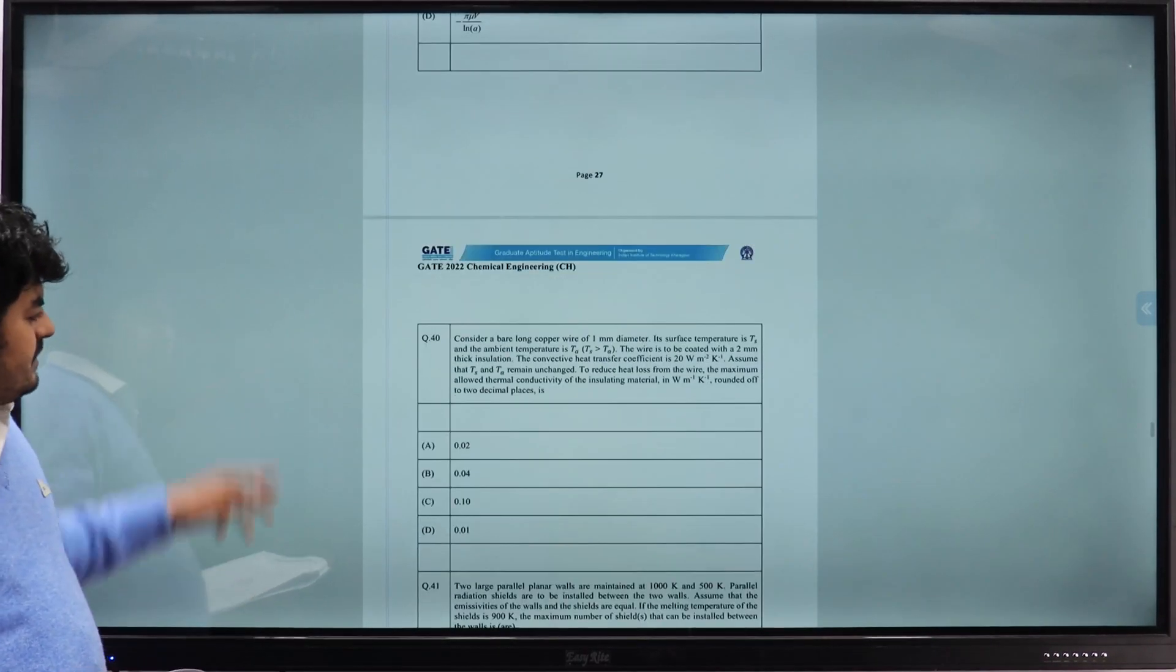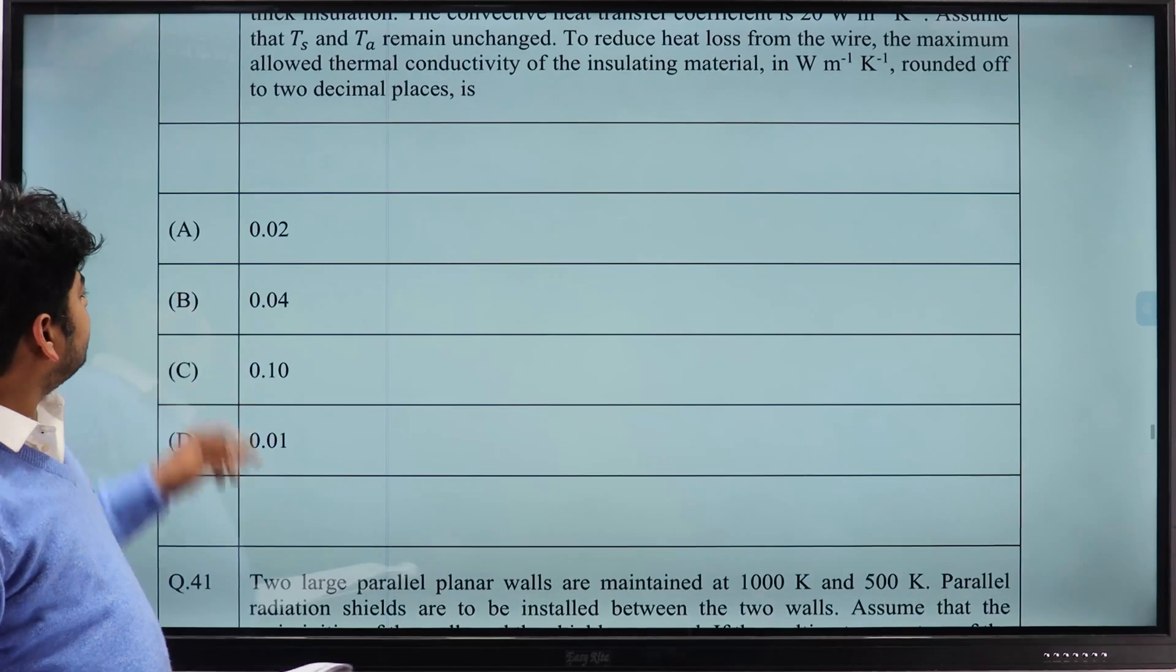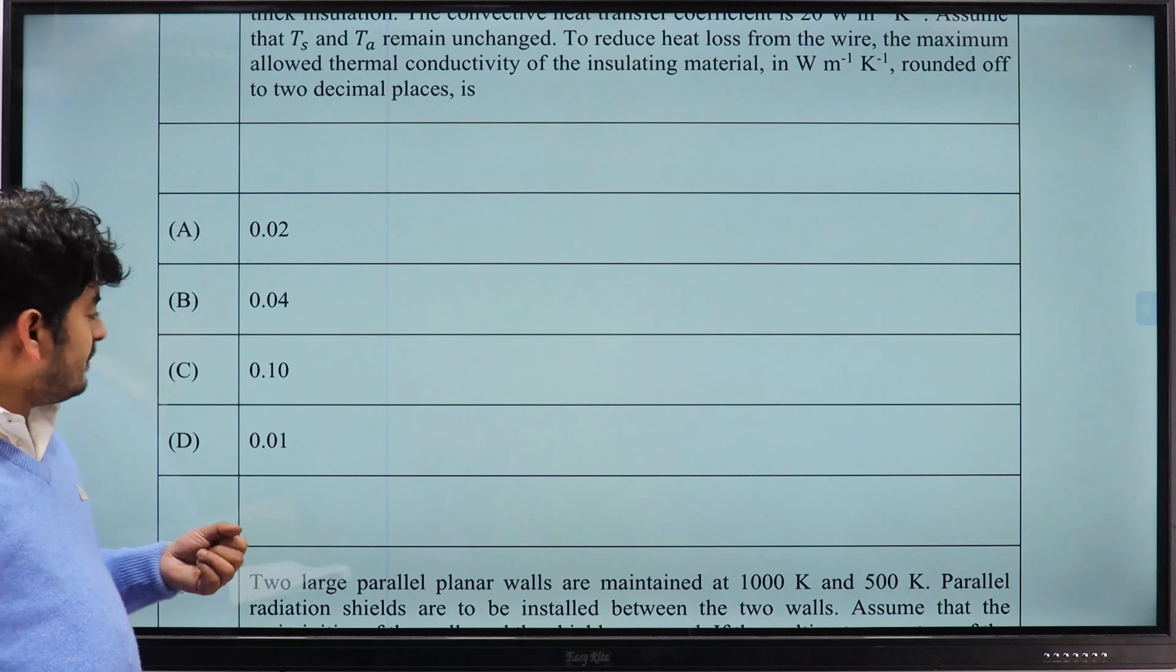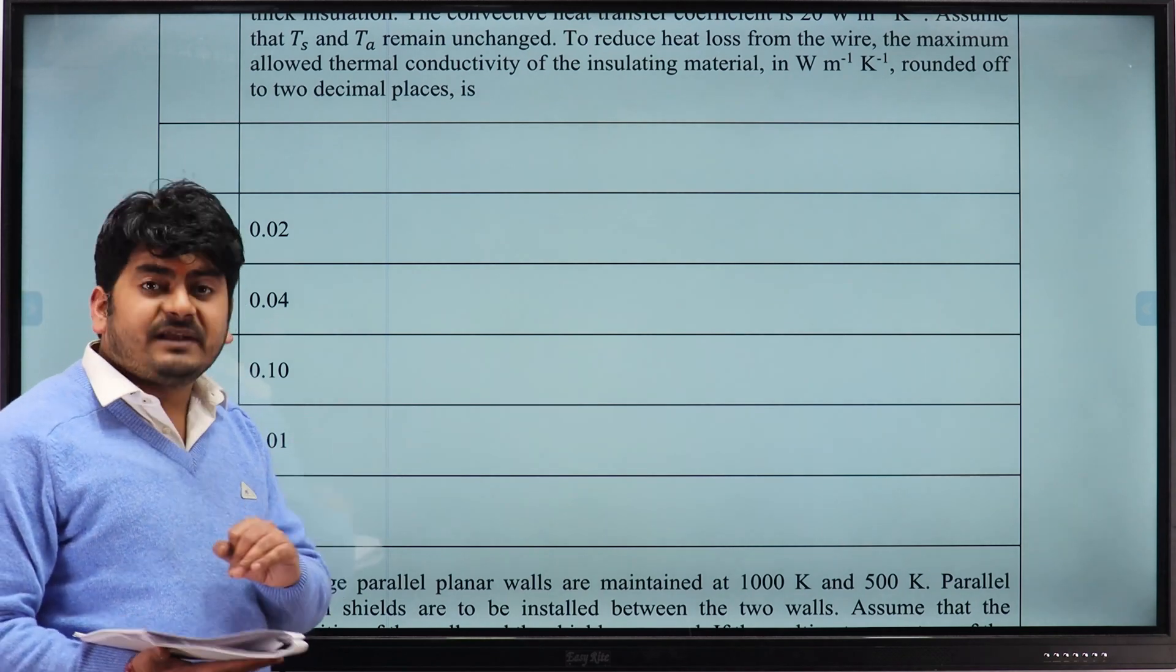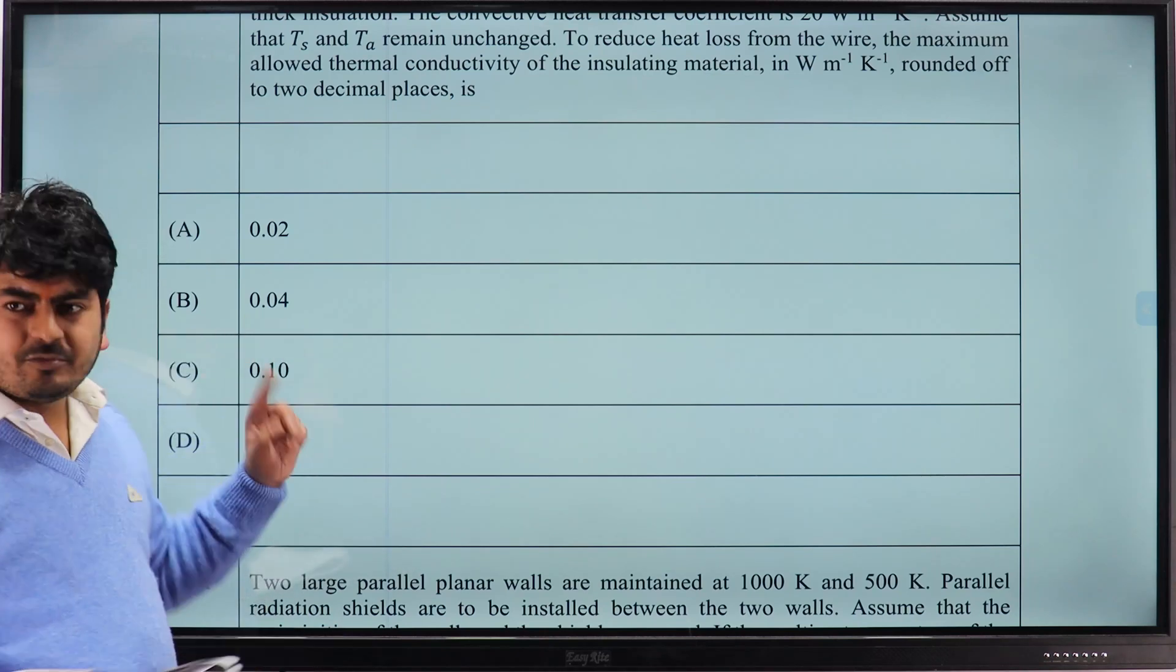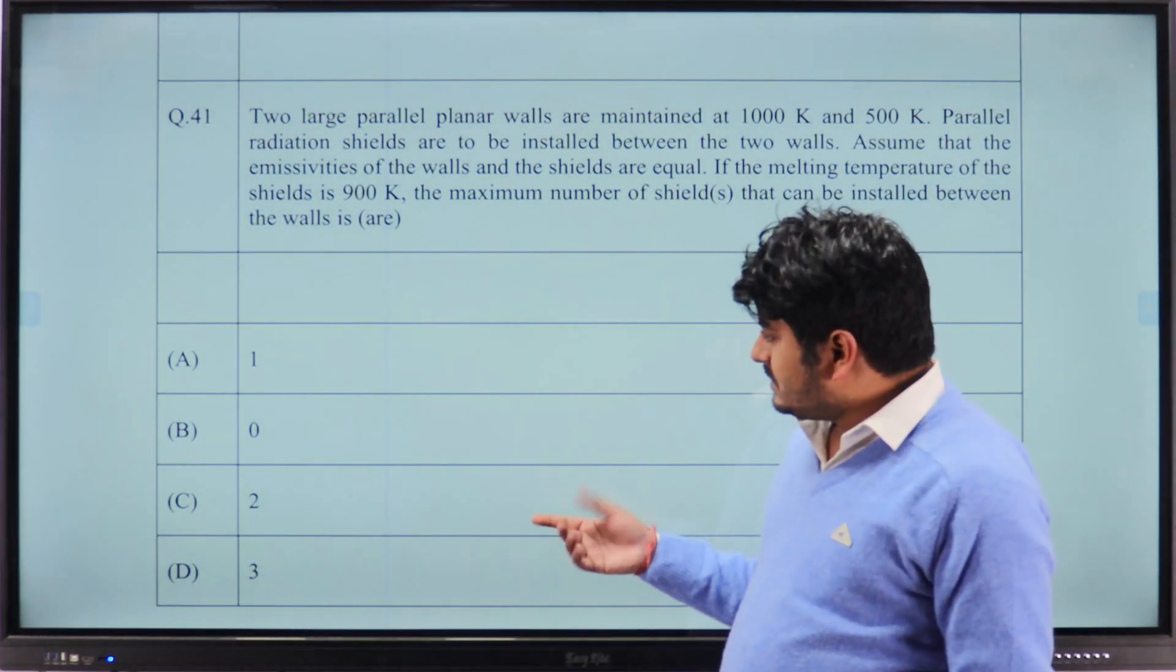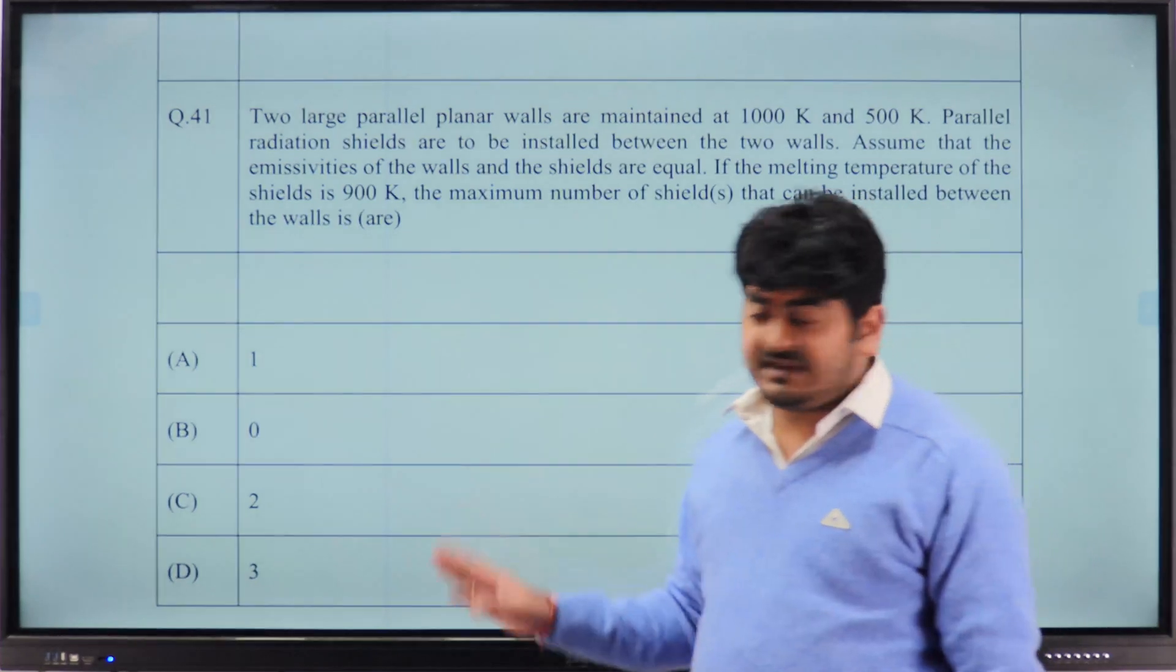Now question number 40 from heat transfer, and here the correct answer is option B, 0.04 by our faculty, or maybe 0.01. You can ask your doubt with him tomorrow, what would be the correct answer. He has sent us two answers, I don't know on what basis, we didn't get that, we haven't discussed with him. Tomorrow he will discuss with all of you maybe 0.01 or 0.04, what is the correct answer you can discuss with him. Now this question from radiation shield, again he will discuss with you. According to him, answer could be either 1 or 1.1. According to him, option A is the answer.